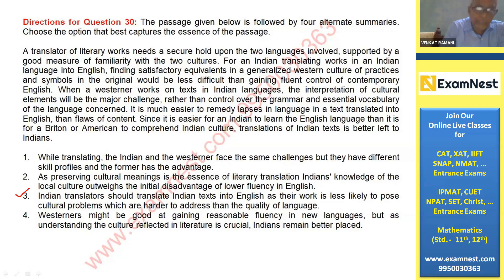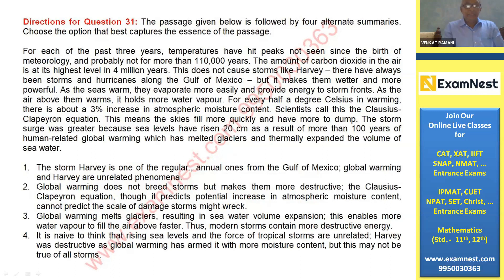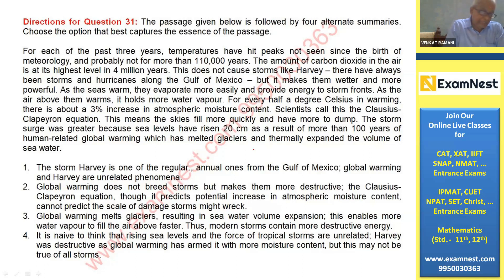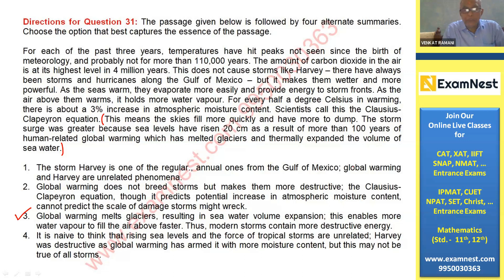The next passage is about global warming. The storm surge was greater because sea levels have risen 20 centimeters as a result of more than 100 years of human-related global warming, which has melted glaciers and thermally expanded the volume of the sea. The answer is number three: global warming melts glaciers resulting in seawater volume expansion, enabling more water vapor to fill the air above, making modern storms more destructive. The other options are incomplete — storm Harvey is not a regular annual occurrence, and global warming and Harvey are not unrelated.